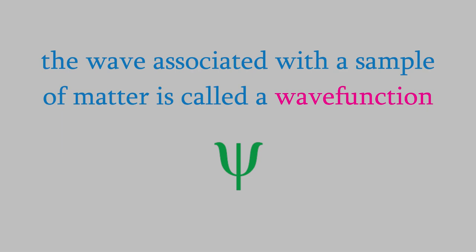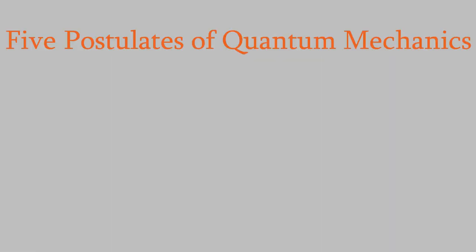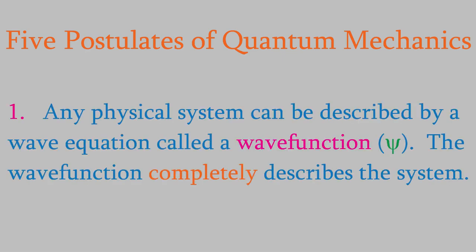Let's talk about some basic ideas of quantum mechanics. Quantum mechanics has five fundamental postulates. Today we'll focus on the first one: any physical system — whether a single particle or a group of many atoms and molecules — is described by a wave equation called a wave function, and this wave function completely describes the system. In other words, the wave function contains all the information it is possible to know about the system.